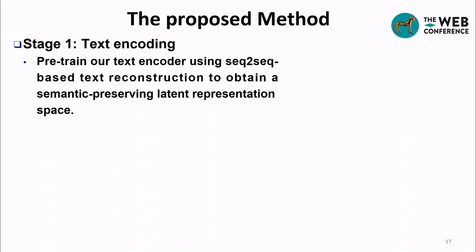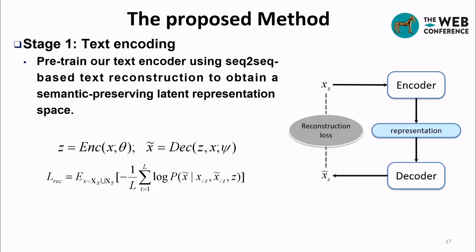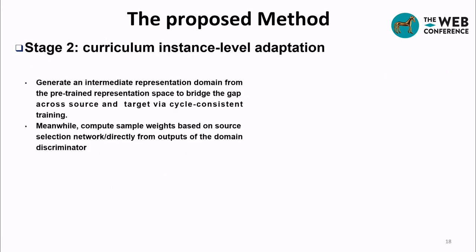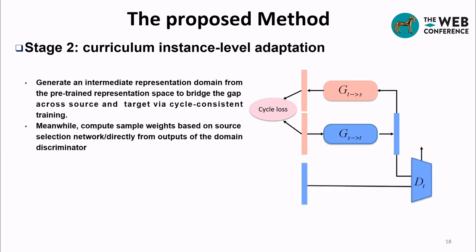The framework consists of four stages. Stage 1: we pre-train the text encoder using sequence-to-sequence learning to obtain a semantic-preserving latent representation space. Stage 2: curriculum instance-level adaptation, where we bridge the gap between source and target samples in representation space using a cycle-consistent generative adversarial network to generate an intermediate representation domain. Meanwhile, we compute sample weights based on two methods: a model-based method using a source selection network, and a model-free method computing weights directly based on the domain discriminator.